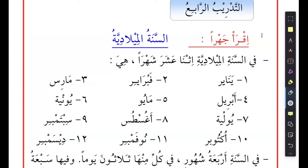It says السنة الميلادية — not the Hijri calendar, this is the English calendar, like the Gregorian calendar. The one that we use: January, February, March, April. So it's talking about this calendar.